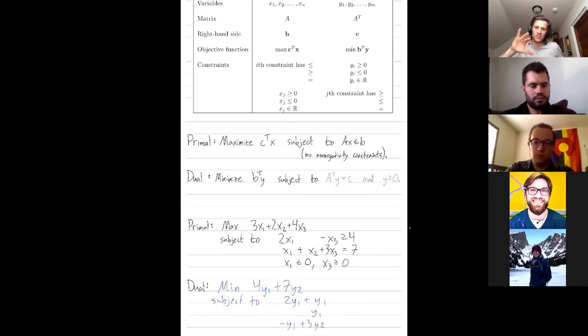This matrix times the vector y is going to be compared to the vector. Yeah, go ahead. I think we have an error. I think we need, in the first line, it should be 2y1 plus y2. Thanks. And then the second line should be y2. Thank you. Totally right. Save me, Patrick.